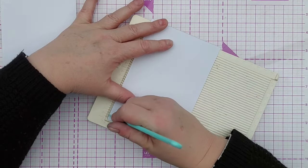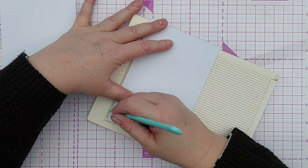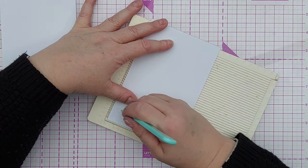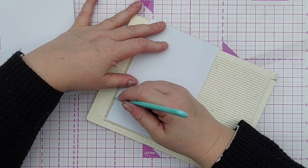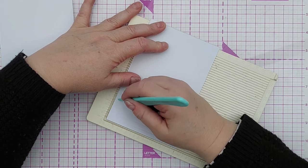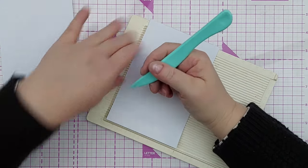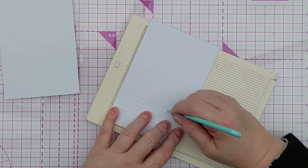To start, I took a 4x6 inch piece of smooth white cardstock, put it on my scoreboard, and scored about two inches worth of lines one-quarter of an inch apart to create an embossed area.